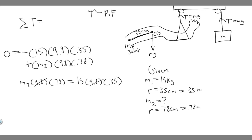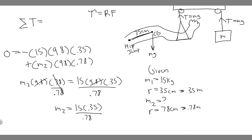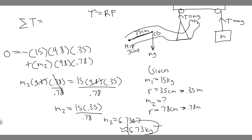Notice that 9.8 cancels from both sides. Then divide both sides by 0.78, giving m2 equals 15 times 0.35 over 0.78. Plugging that in: 15 times 0.35 divided by 0.78 gives m2 equal to approximately 6.73 kilograms. You can round however your teacher prefers, but 6.73 kilograms is the mass of the suspended object.